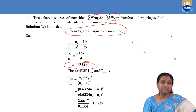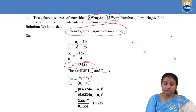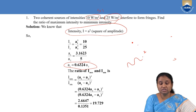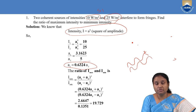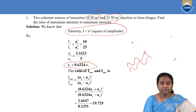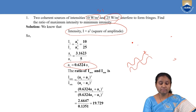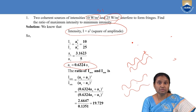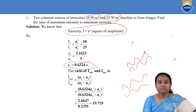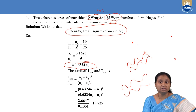We need to find the ratio of maximum intensity to minimum intensity. In order to get maximum intensity or constructive interference, the crest of one wave should fall on the crest of another wave and the trough on the trough. So their amplitudes are added up, and maximum intensity is written as (A1 + A2) whole square. For minimum intensity, the crest of one wave falls on the trough of another wave, so cancellation takes place, and minimum intensity is written as (A1 − A2) whole square.